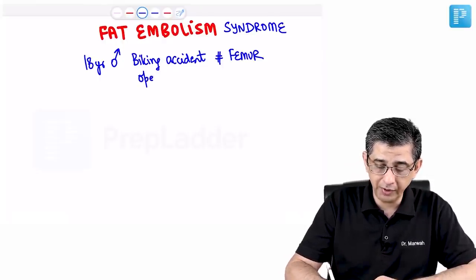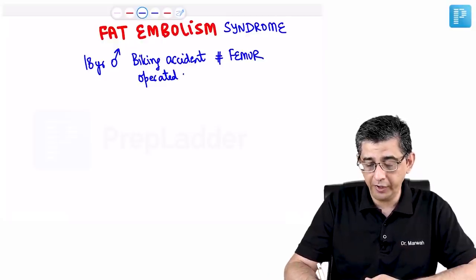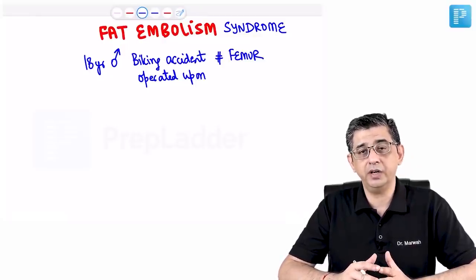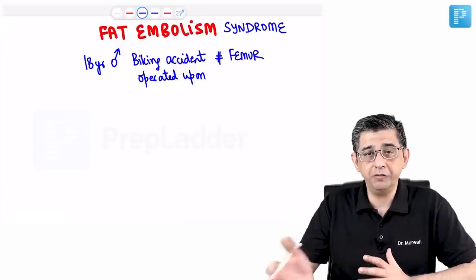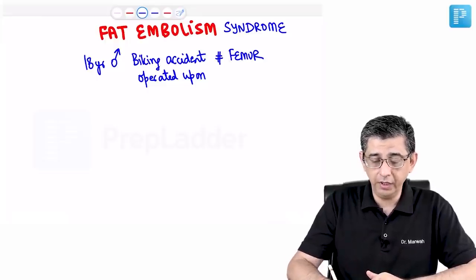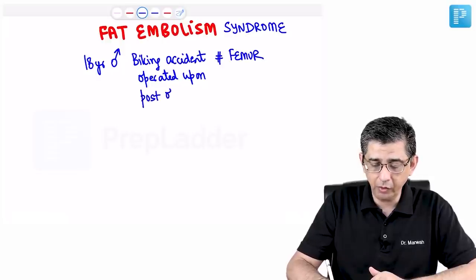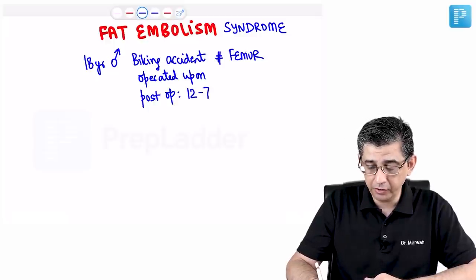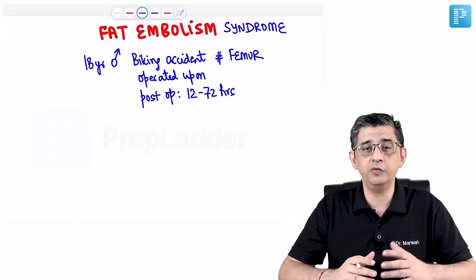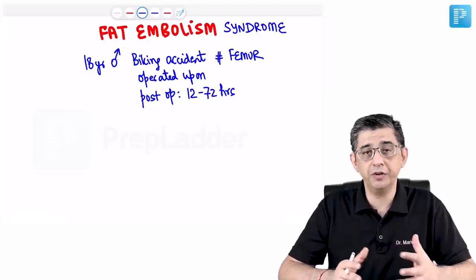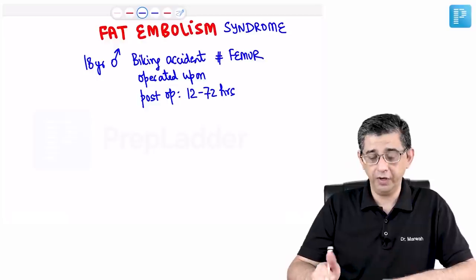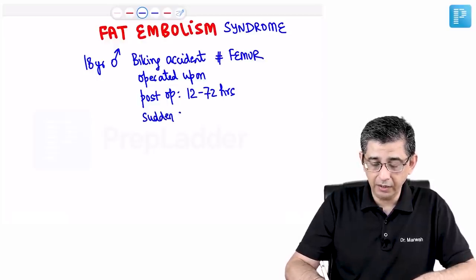He was rushed to hospital where the best orthopedician operated on him for the fracture — it may have been an open fracture with extensive soft tissue damage. Post-operatively, approximately 12 to 72 hours later, there is a sudden deterioration. I call it unfortunate because it becomes very difficult to explain to relatives who don't understand fat globules, free fatty acids, or endothelial damage.